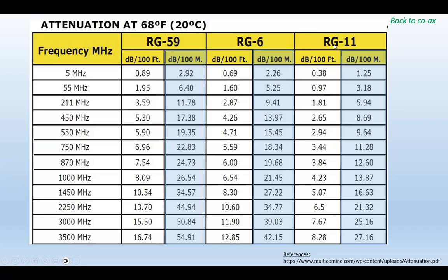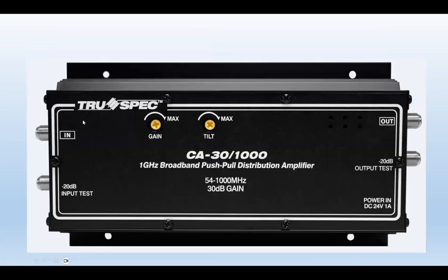So RG11 is the best, RG6 is next, and RG59 is the lowest. As we go along, the frequency gets higher and they get attenuated more — higher frequencies do not have as much punch-through as lower frequencies. This means if you are installing a CCTV system and you are using something called an RF or Radio Frequency Amplifier, also called a distribution amplifier.